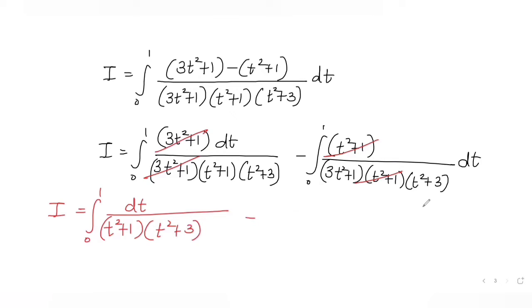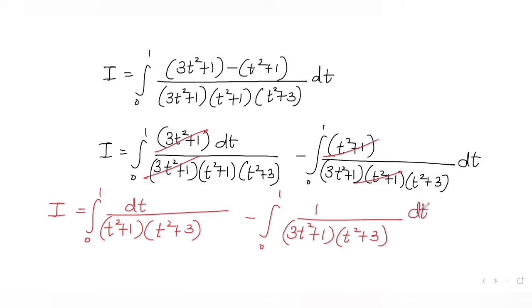The second part of the split gives ∫₀¹ 1/[(3t²+1)(t²+3)] dt. So I now have two integrals with opposite signs to work with further.